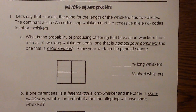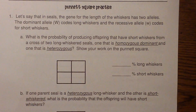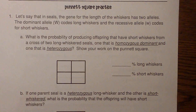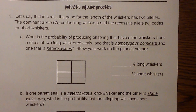This first problem says: in seals, the gene for the length of whiskers has two alleles. The dominant allele, capital W, codes for long whiskers, and the recessive allele, lowercase w, codes for short whiskers. What is the probability of producing offspring with short whiskers from a cross of two long-whisker seals — one that is homozygous dominant and one that is heterozygous?